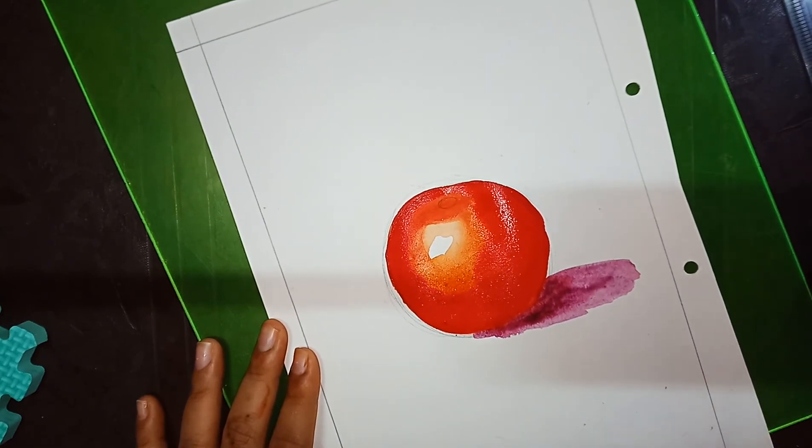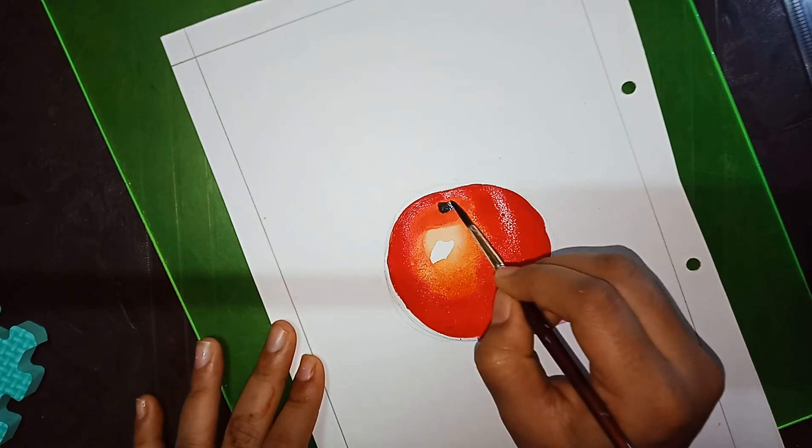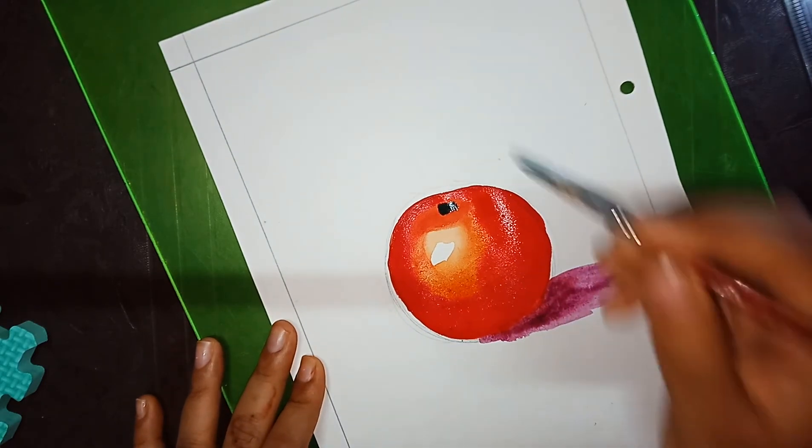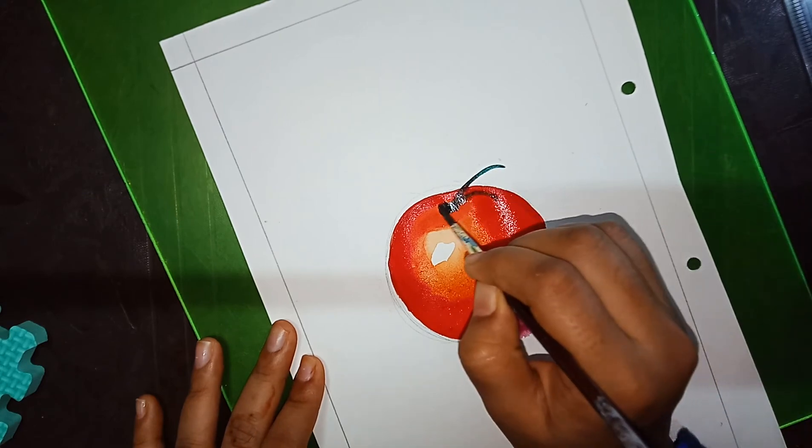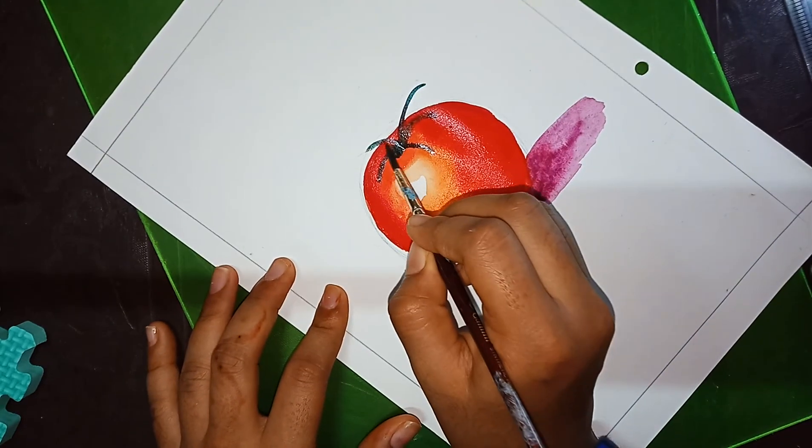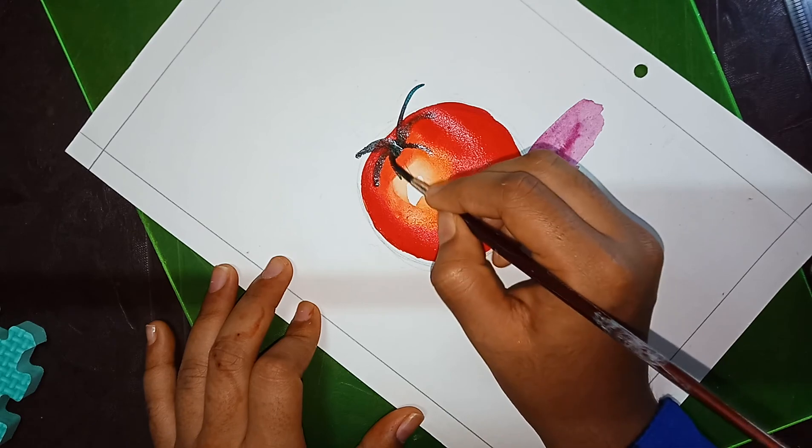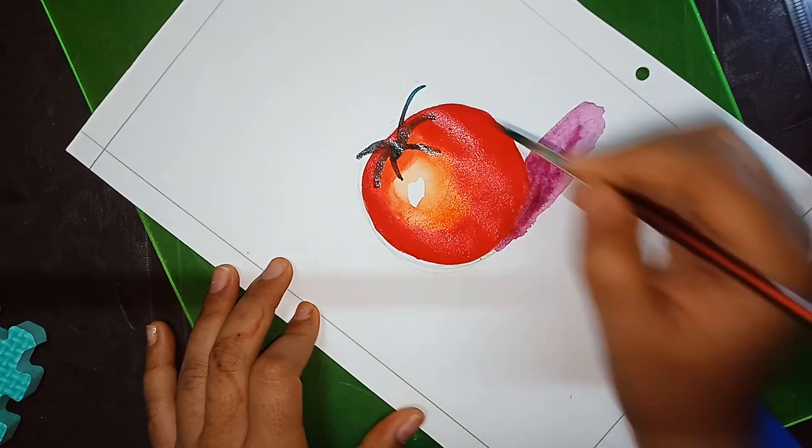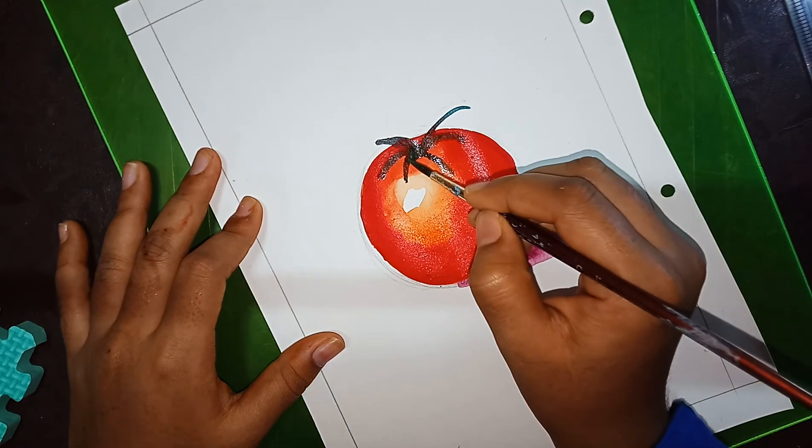Now we are going with the green color. From that circle, you need to come out with the green color. Wait till the color dries, and then take again a light green color.